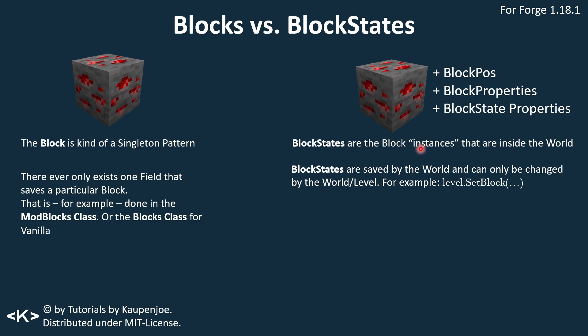You can think of block states as block instances inside of the world. Block states actually save the position and some block properties — those would be the block behavior properties assigned when creating the block, and also the block state properties which we'll see in a moment. Block states are saved by the world and can only be changed by the world or the level, which usually happens on the server. This is done via level.setBlock passing in some parameters.